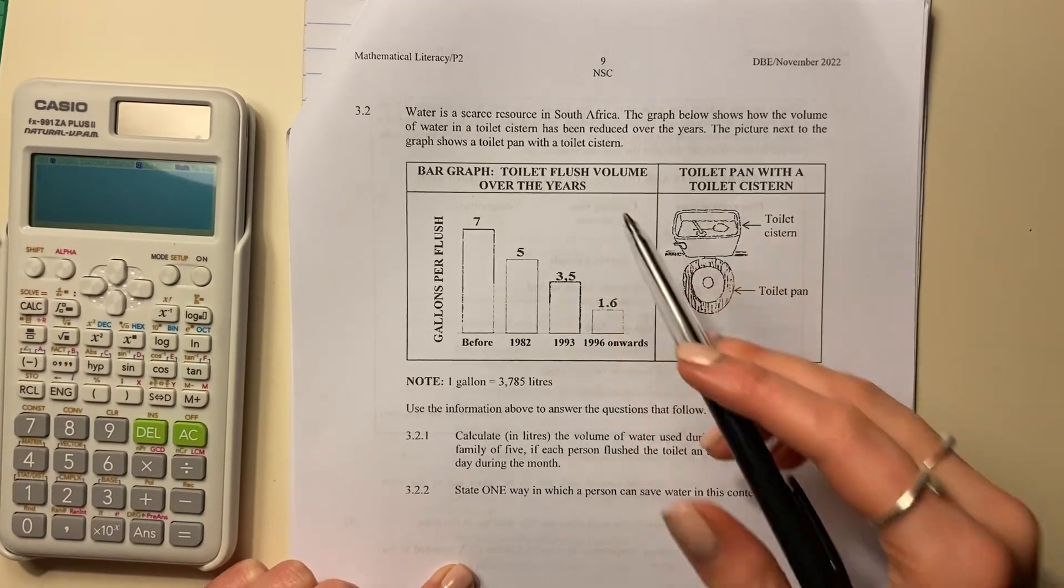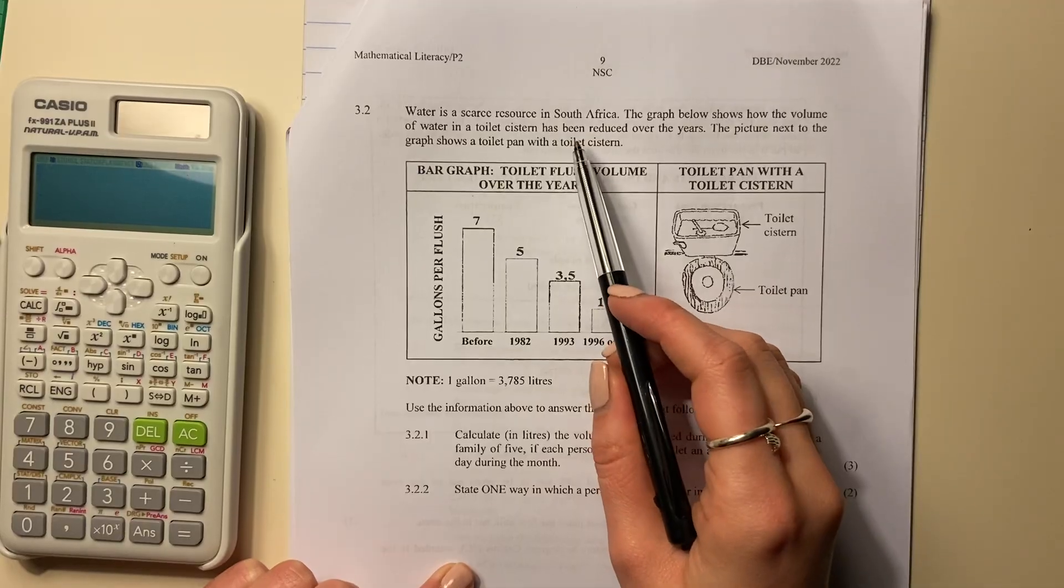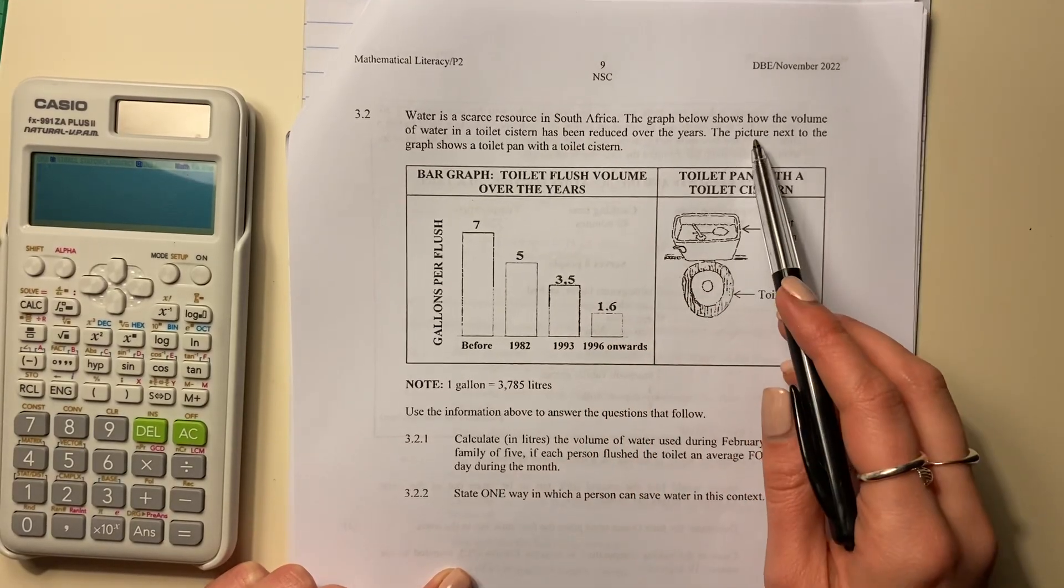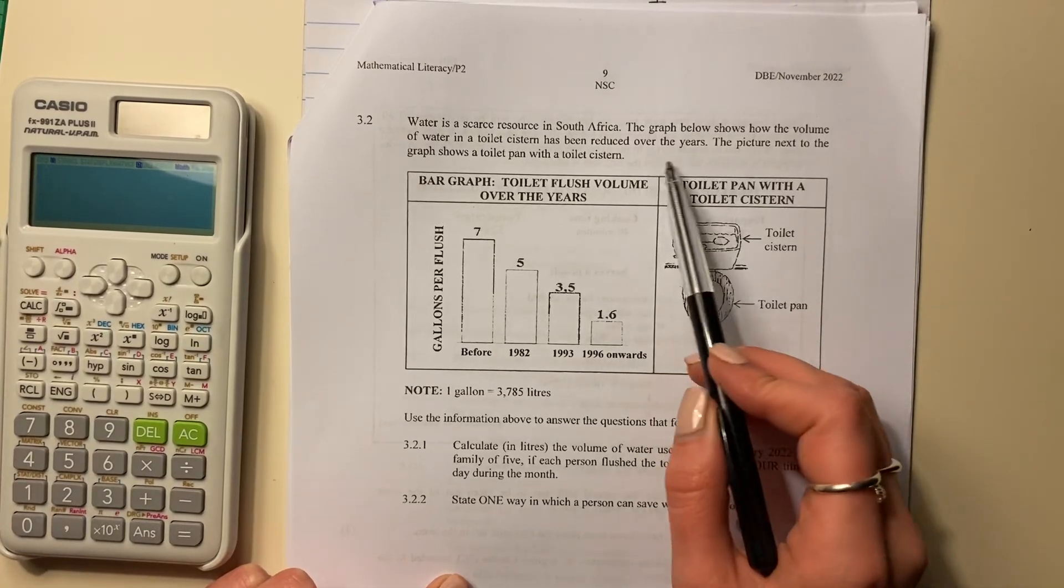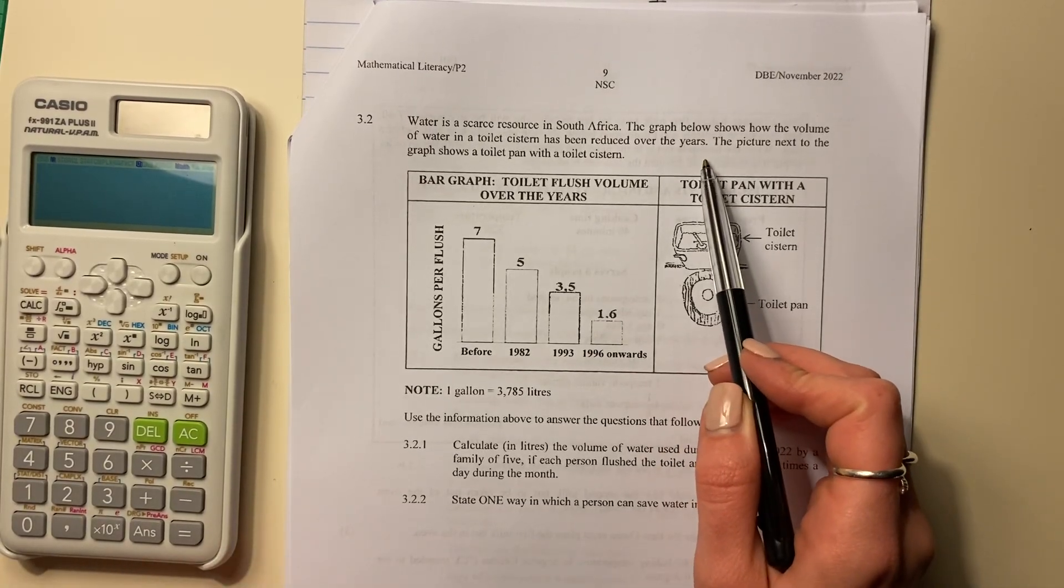Let's look at question 3.2. Water is a scarce resource in South Africa. The graph below shows how the volume of water in a toilet cistern has been reduced over the years. That's basically to save water, right?